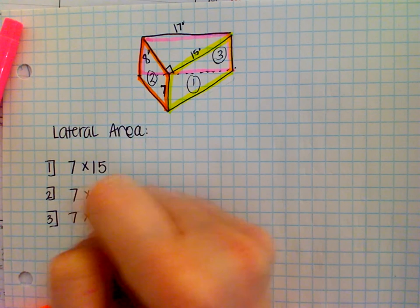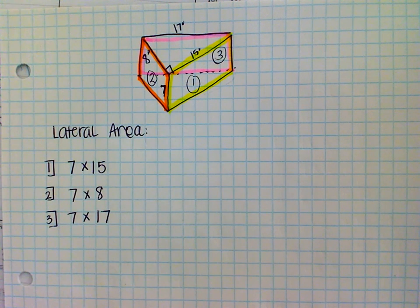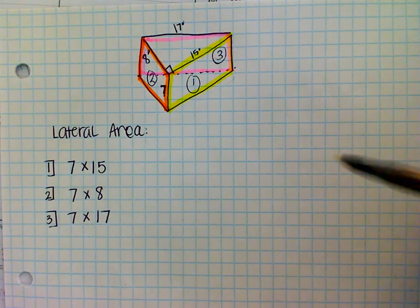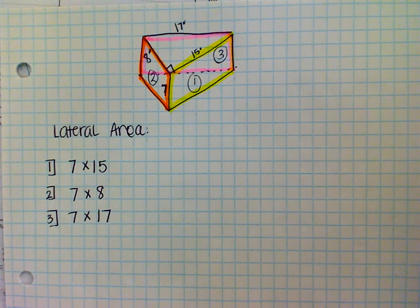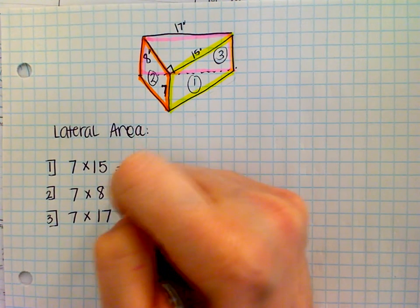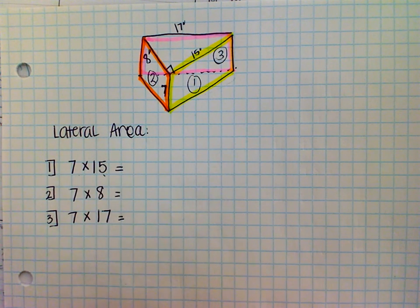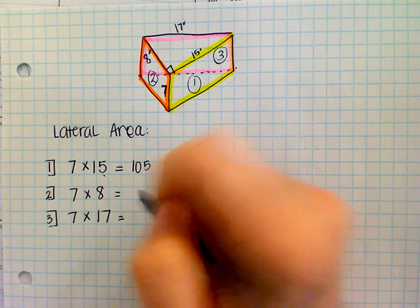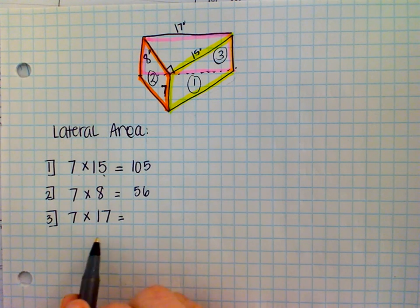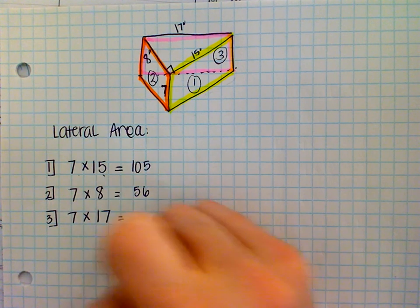What do you notice is similar about all three faces, Katie? They all have seven as their height, good. All right. So, seven times fifteen, 105? Yes. Seven times eight? 56. 56. And seven times seventeen? Equals 119. 119. 119, all right.